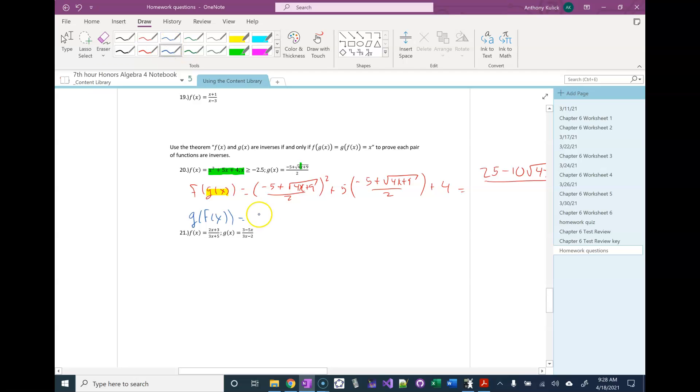So I have negative 5 plus square root 4 times x squared plus 5x plus 4 plus 9 all over 2.